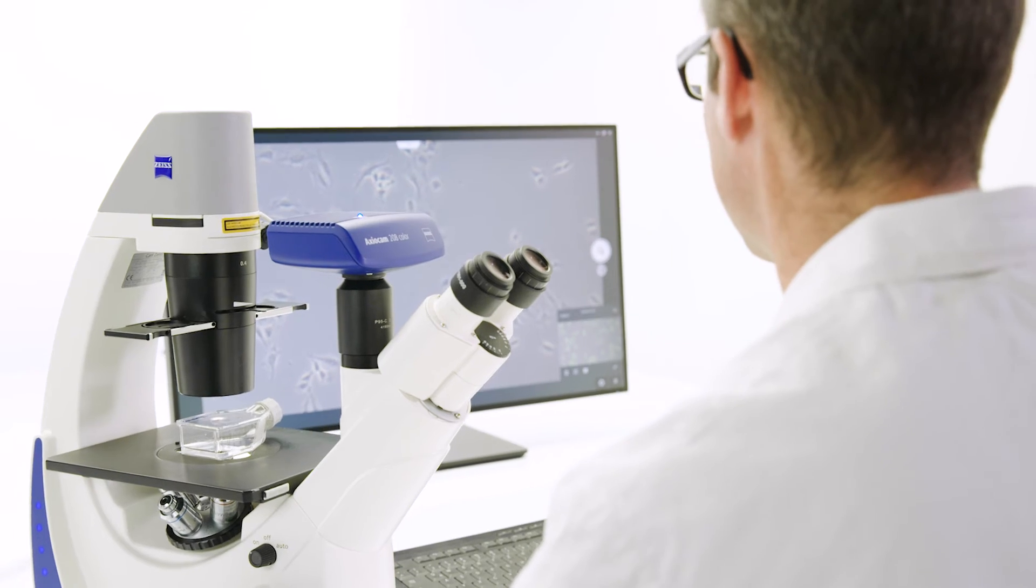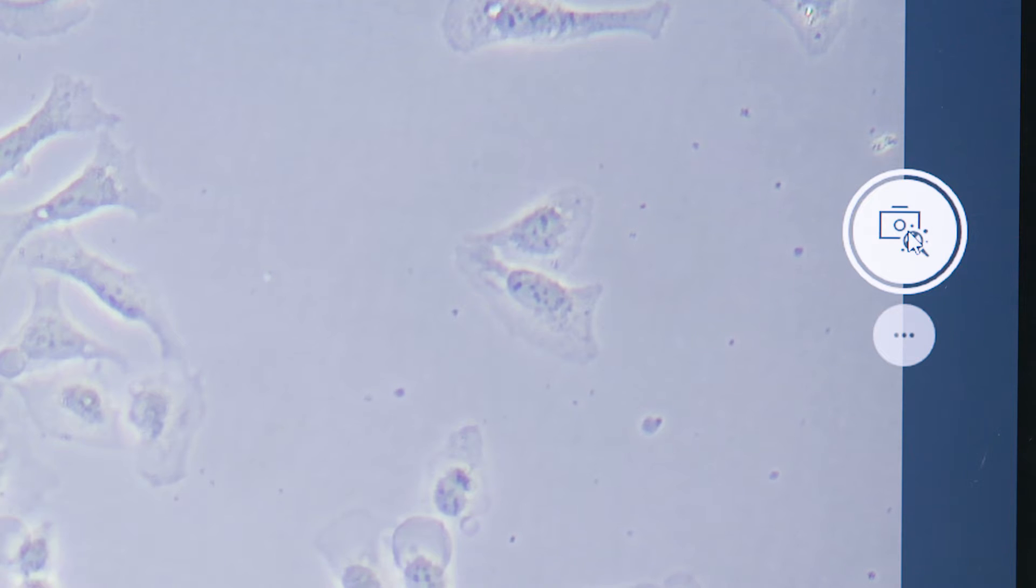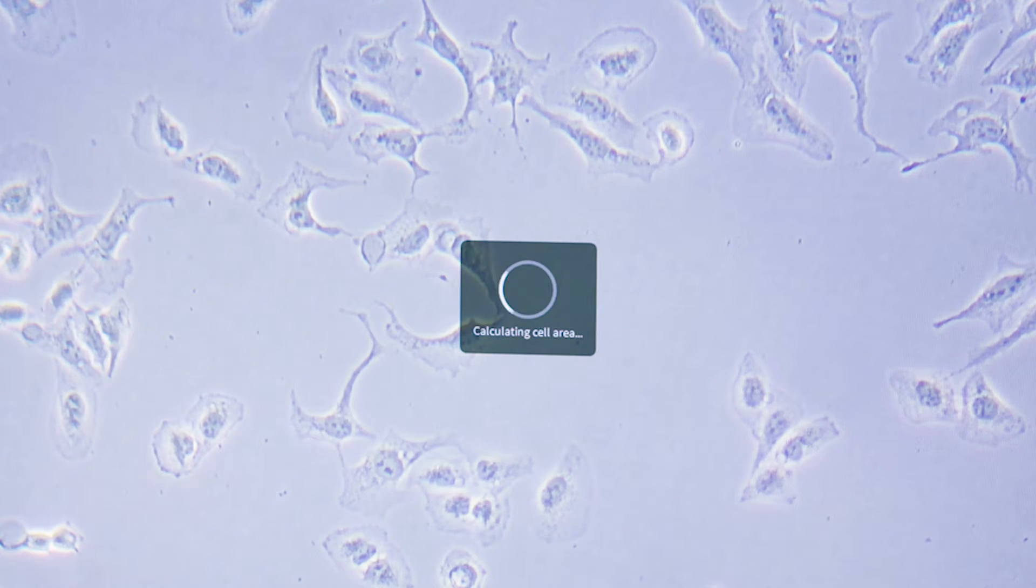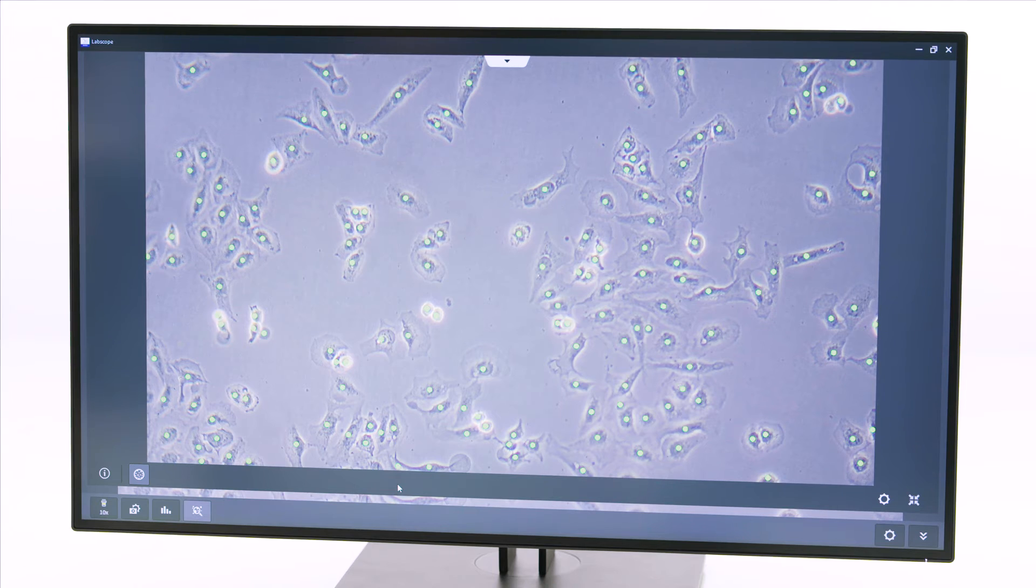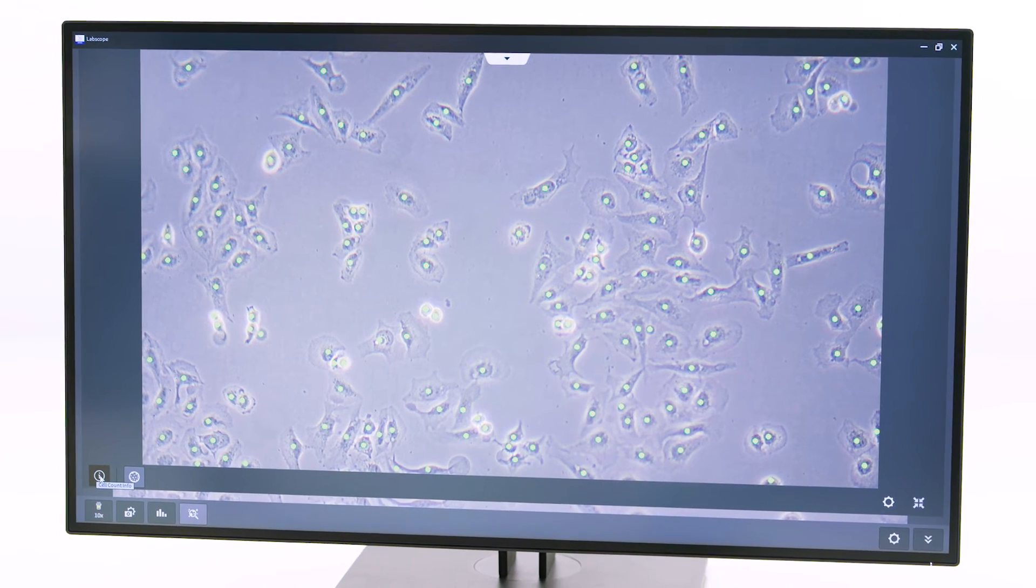You simply acquire a phase contrast image of your cells and the artificial intelligence algorithm automatically detects and counts the cells for you. You don't need to adjust any parameter.